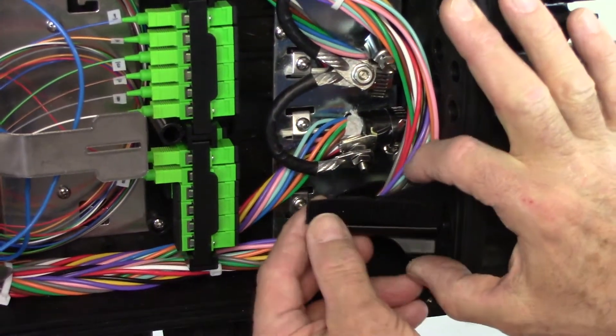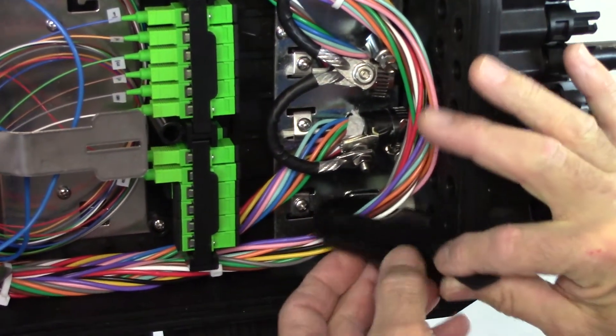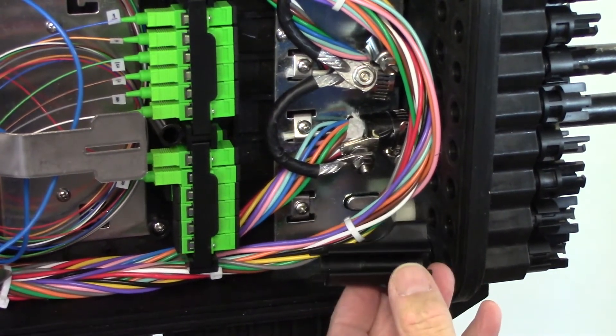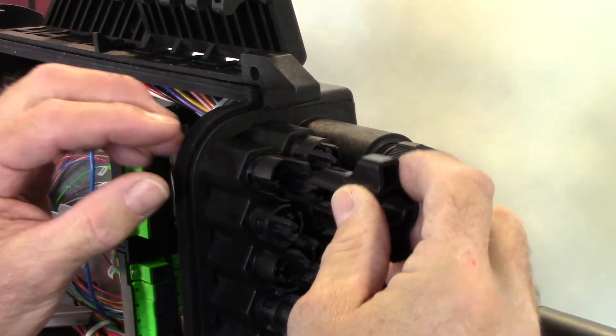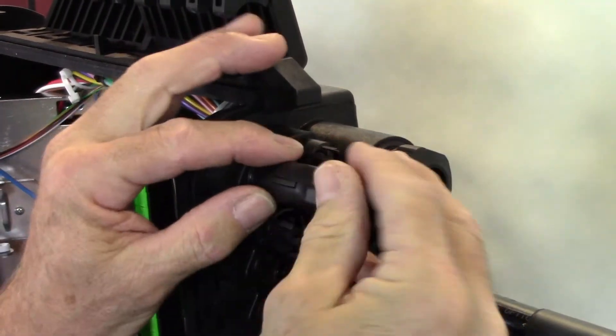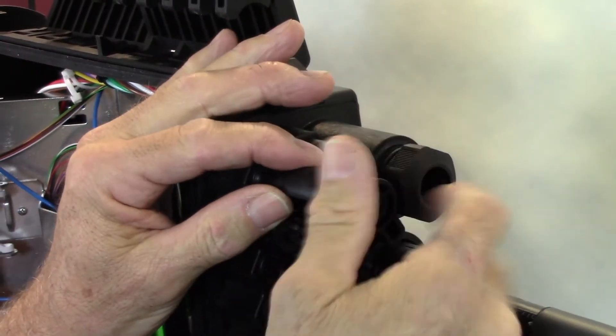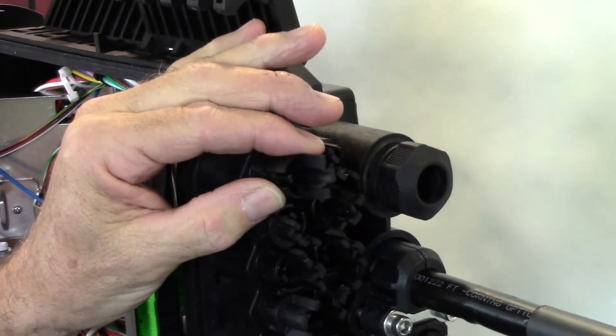Remove the drop port tool that will be used to install the first drop cable. Loosen and remove the drop plug and grommet. Remove the small insert in the drop plug. This insert must be reinstalled for proper sealing.